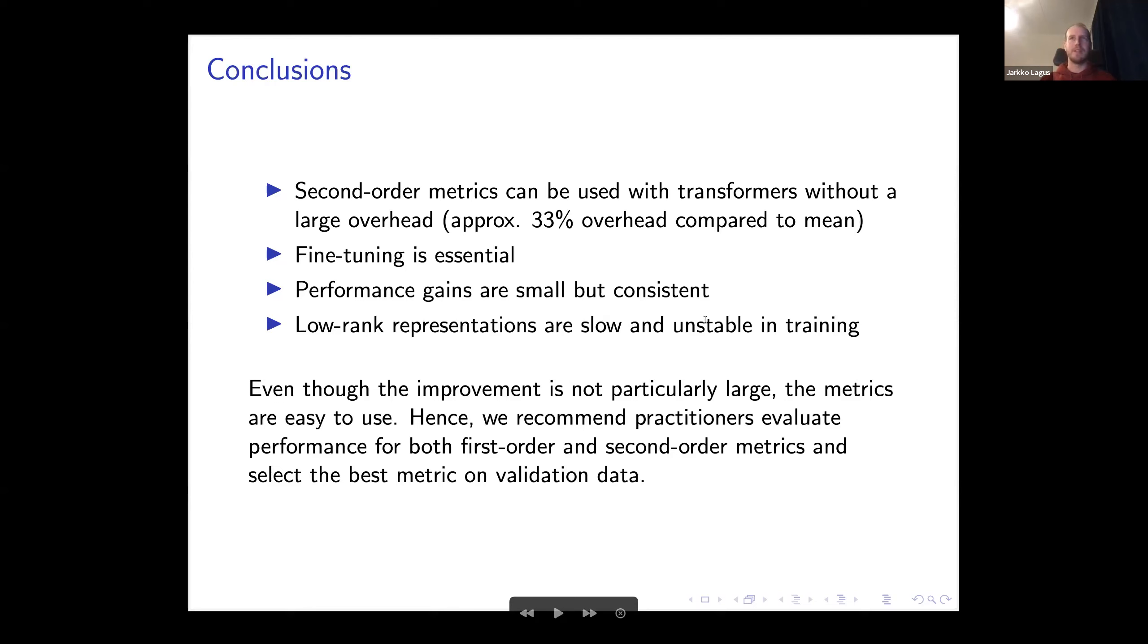The bad thing is that the low rank representations are slow and unstable in training. Because you need to train through the SVD transformation, they become very slow to train. There's a bottleneck in making this low rank, even though they are smaller in size and computational complexity. In practice, they are much slower. What we recommend is trying out both and see which works, because if the gain is small but the computational cost is high, then you probably don't want to use these methods.